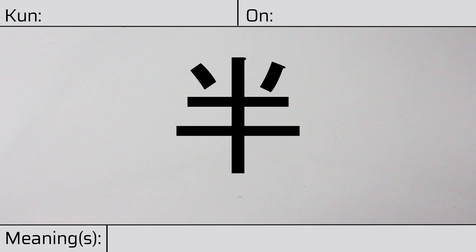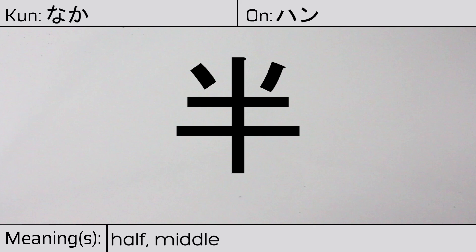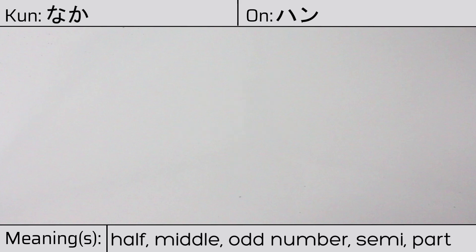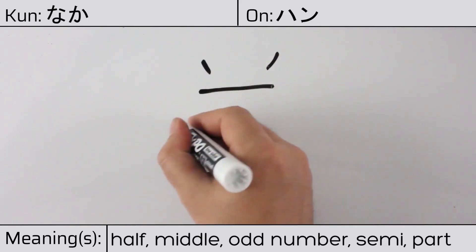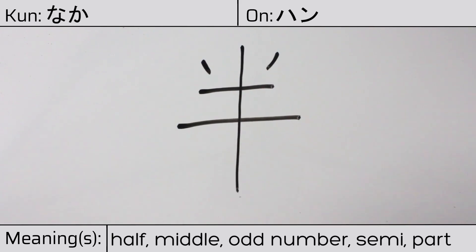Welcome to this lesson on Japanese kanji. Today, we'll be discussing this character. This kanji has a kunyomi or Japanese reading of naka, and it has an onyomi or Chinese reading of han. This character has the meanings half, middle, odd number, semi, or part. Here is the stroke order.